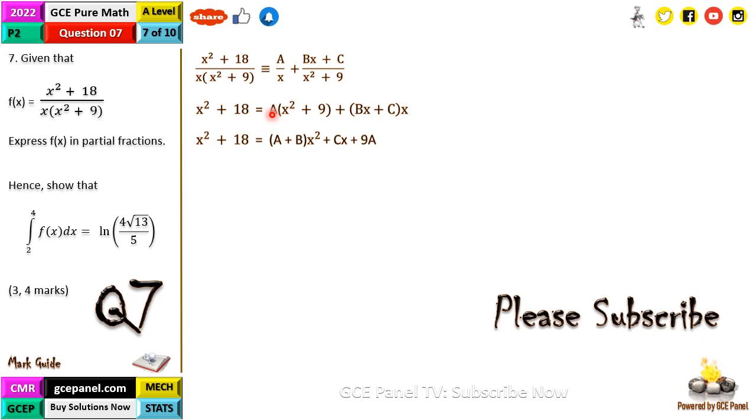We're going to have A x squared plus b x squared, so A plus b times x squared. Then 9A is a constant and c times x is a polynomial of degree one. Equating coefficients, on the left hand side the coefficient of x squared is one and on the right hand side is A plus b, so A plus b equals one. The constant on the left is 18 and on the right is 9A, so 9A equals 18.